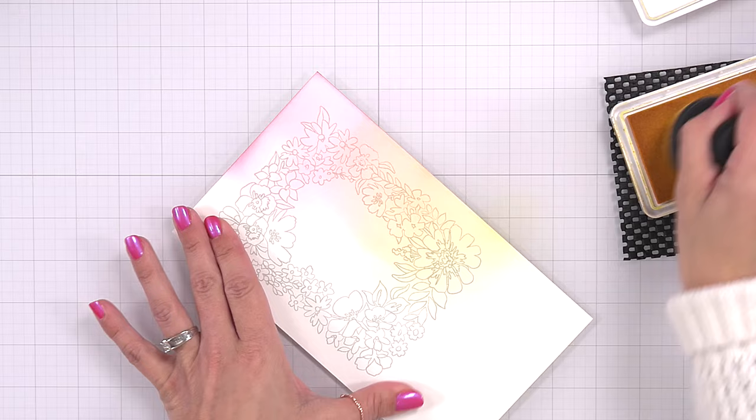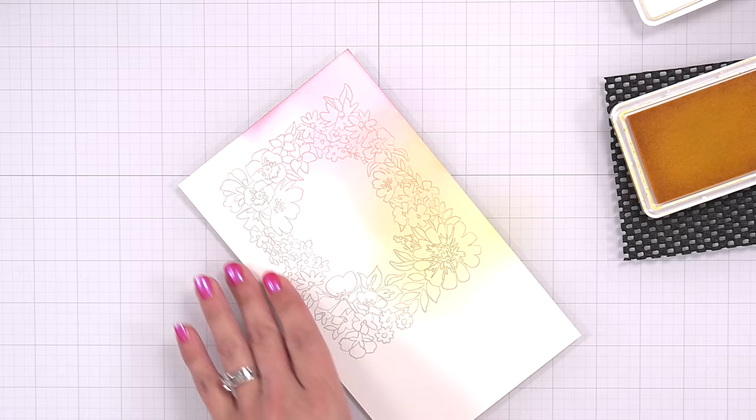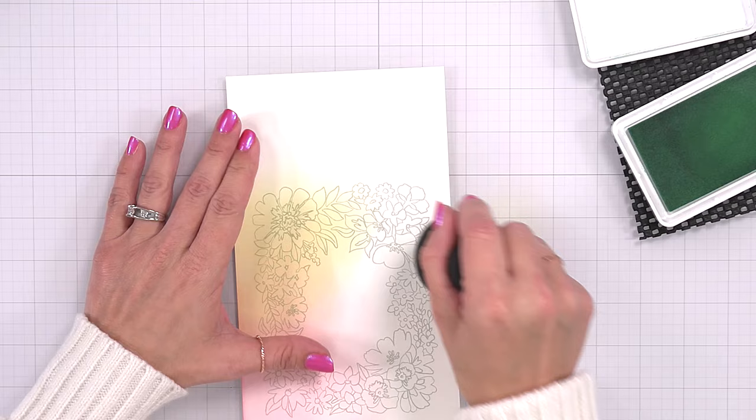When I was thinking about how I wanted to do this card, I picked out two different shades. So for the pinks, I did a light pink and a dark pink. Same thing with the orange and the yellow. So this is all going to be the light colors that I chose.